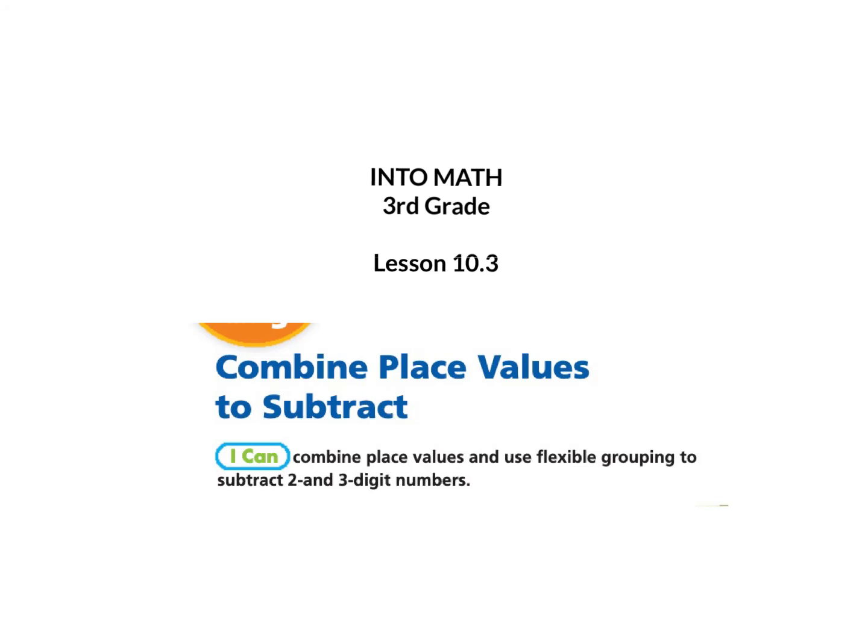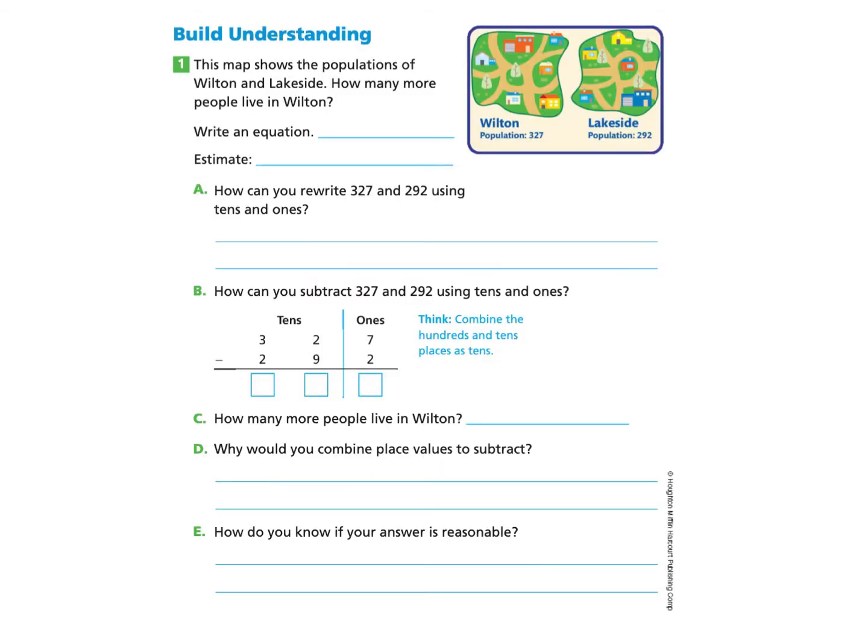This is IntoMath 3rd grade lesson 10.3, Combine Place Values to Subtract. I can combine place values and use flexible grouping to subtract two and three digit numbers. Please gather your workbook and a pencil and turn to page 280. You can pause anytime you need.